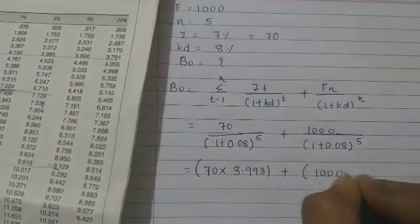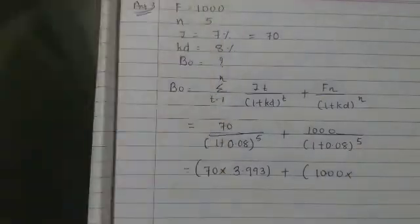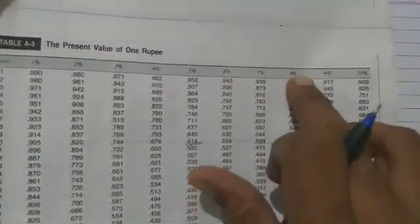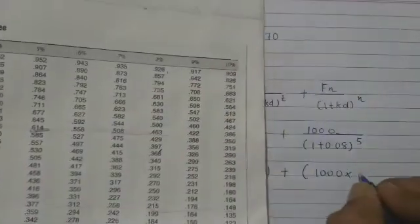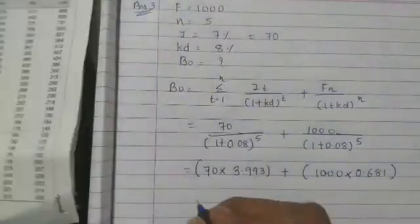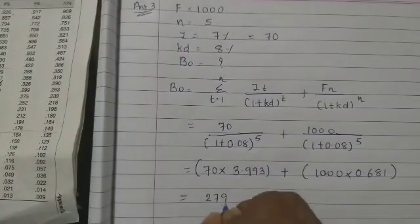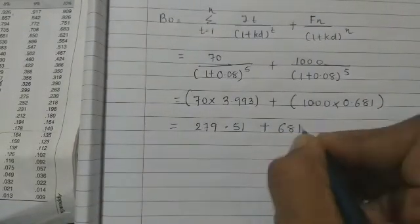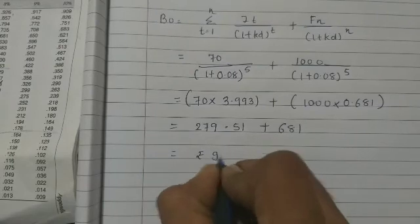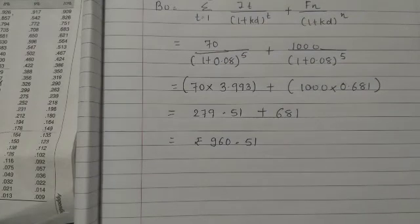So 3.993 × 70, plus 1000 received one time, so we look at 8 percent for the 5th year in the present value factor table. Present value factor at 8 percent for 5 years: 1, 2, 3, 4, 5 is 0.681. Multiply these: the answer will be 279.51 + 681. So the answer is rupees 960.51. Clear? All of you? Easy.